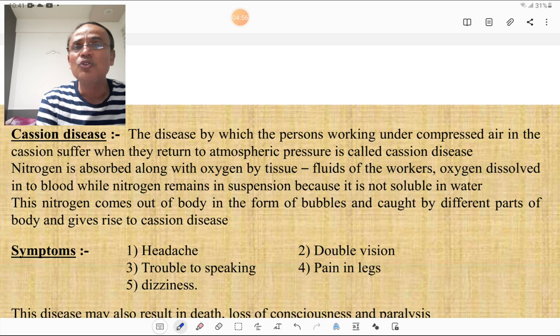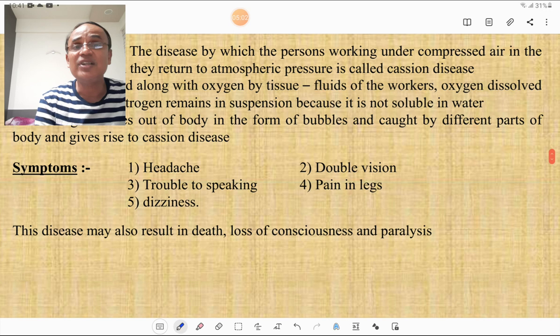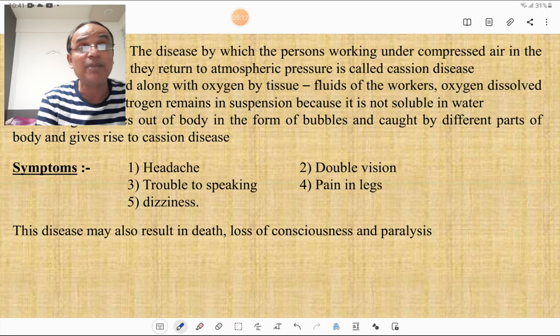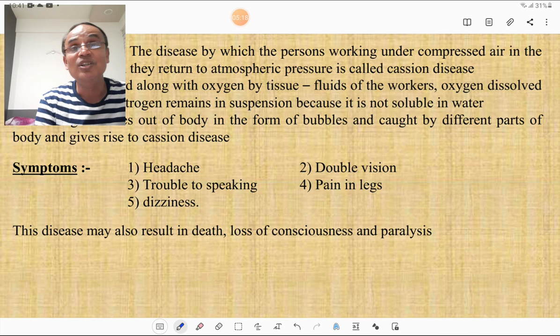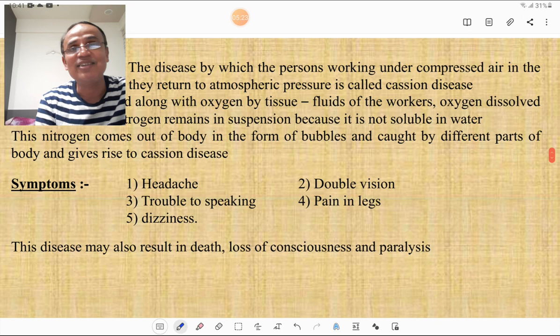What are the different symptoms of this caisson disease? First is headache, second is double vision, third is trouble in speaking, fourth is pain in legs, and fifth is dizziness. And this disease may also result in loss of consciousness and paralysis and sometimes it results in death also. So please be careful to know about the caisson disease.